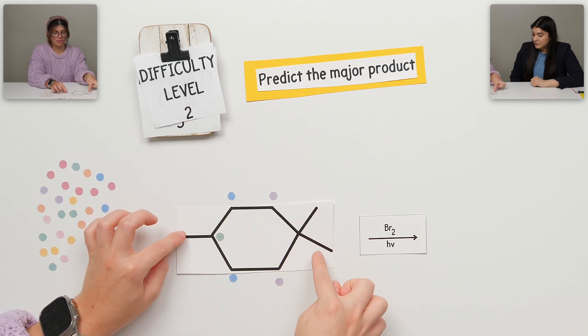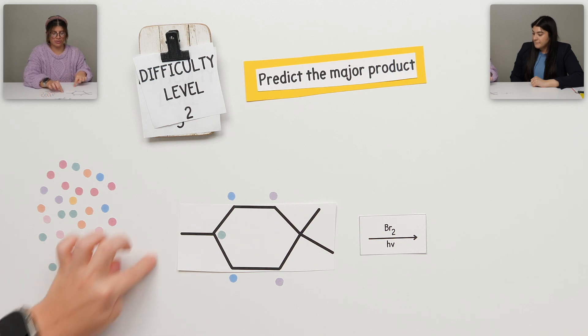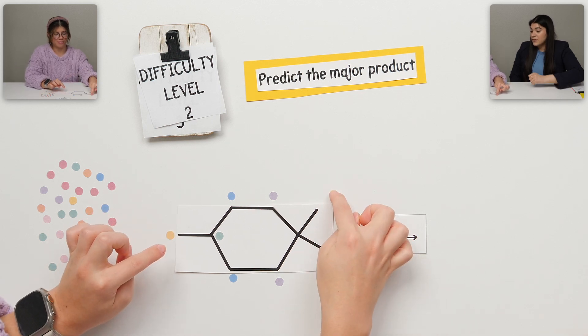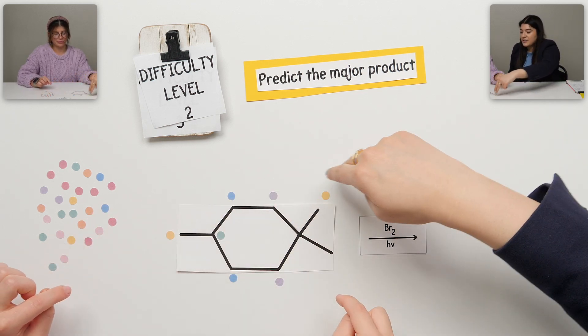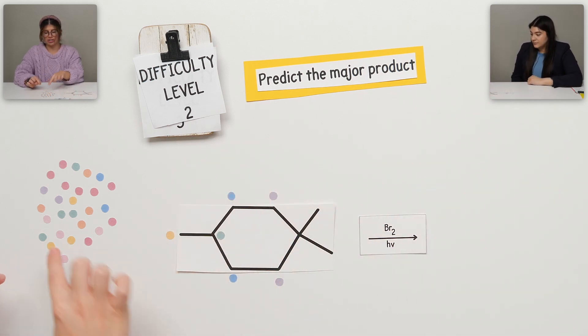And then we have a few primary ones. So these guys right here, but these two wouldn't be the same, correct? Because this one's attached to the carbon with four bonds.